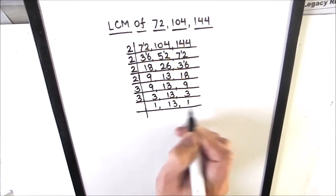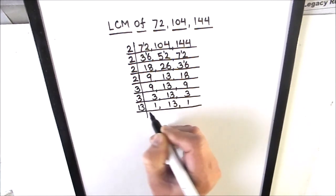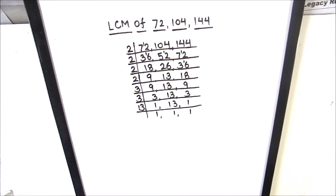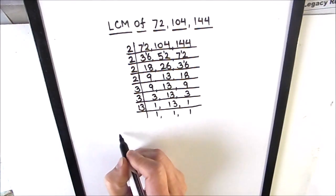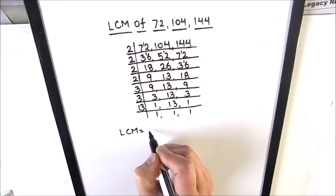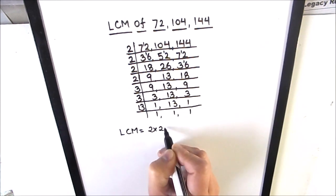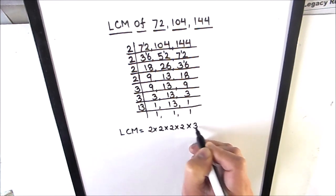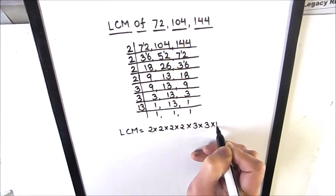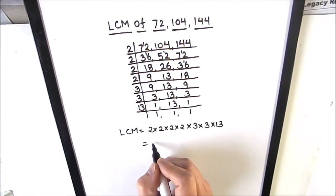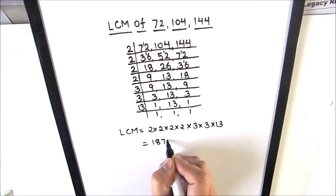Now 13 is a prime number, it is only divisible by 13, so 13 times 1 is 13. All the numbers are now fully divided. To find the LCM we are going to take the product of all the factors on the left hand side of the ladder. So LCM will be 2 × 2 × 2 × 2 × 3 × 3 × 13, which equals 1872.